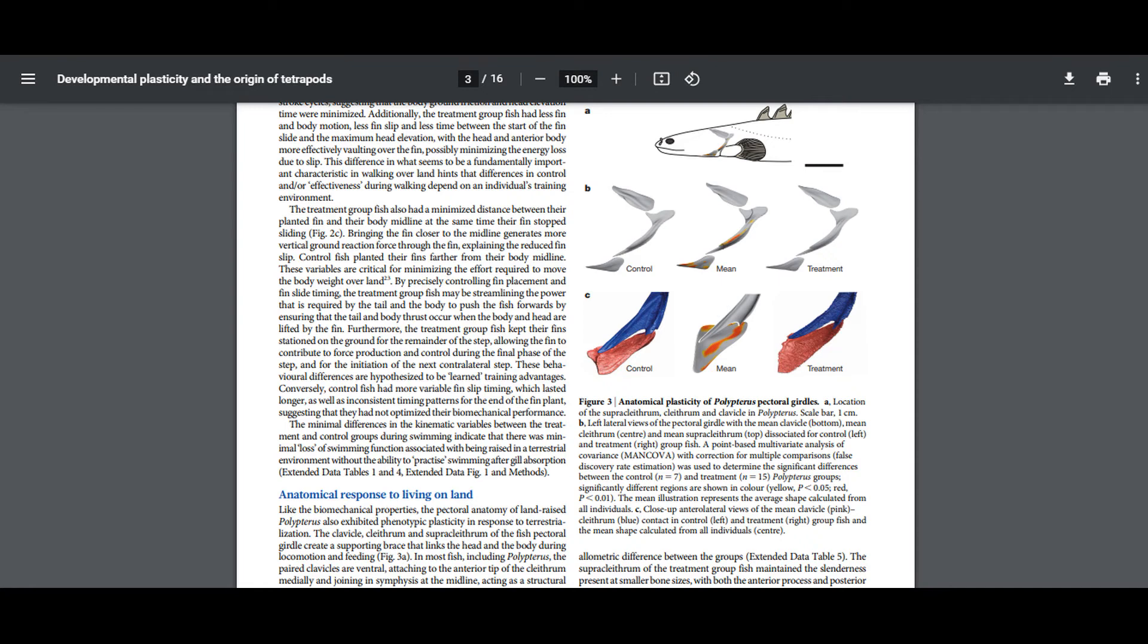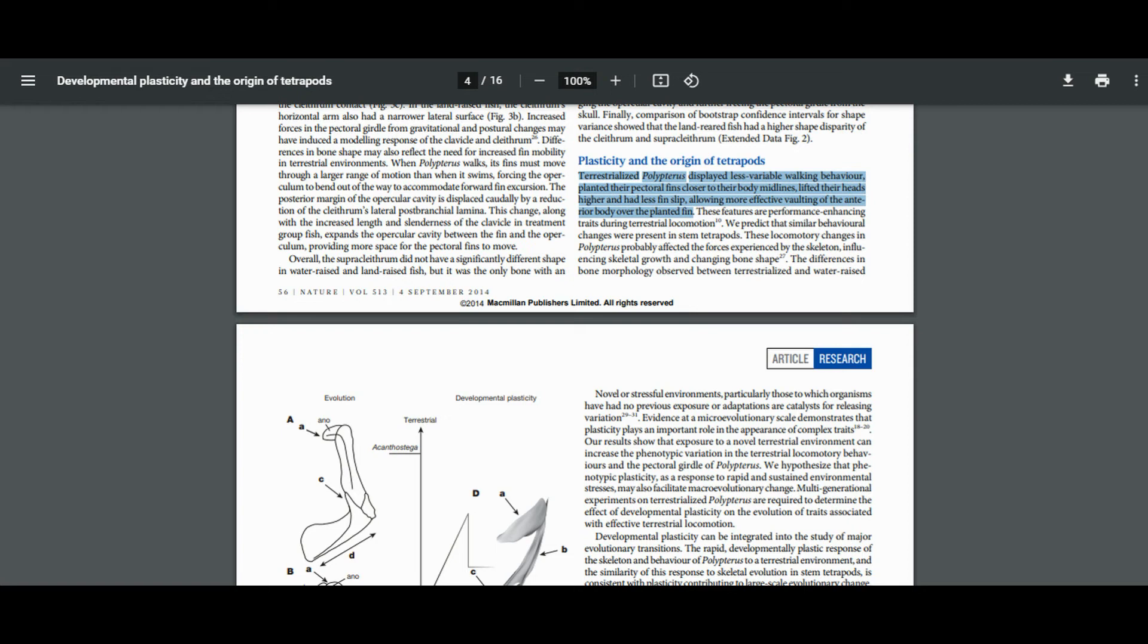The land-raised Bichirs had a number of phenotypic changes. For one thing, their clavicles were narrower and more elongated, and their cross-sections were thinner. According to the paper, terrestrialized polypterus displayed less variable walking behavior, planted their pectoral fins closer to their body midlines, lifted their heads higher and had less fin slip, allowing more effective vaulting of the anterior body over the planted fin.